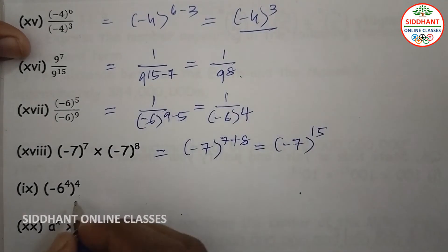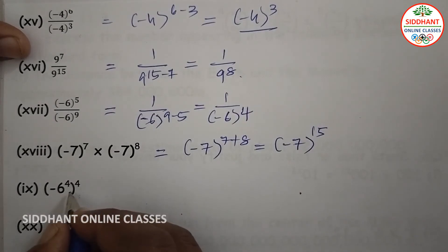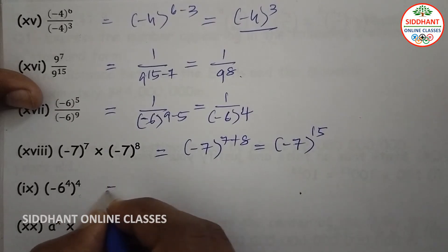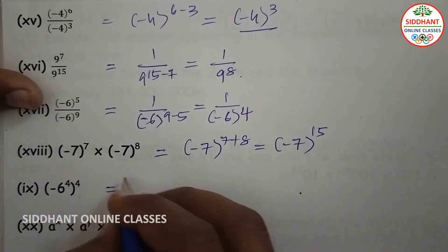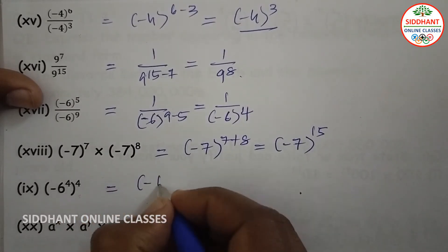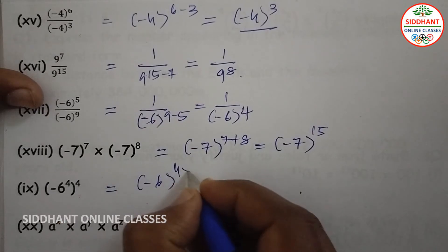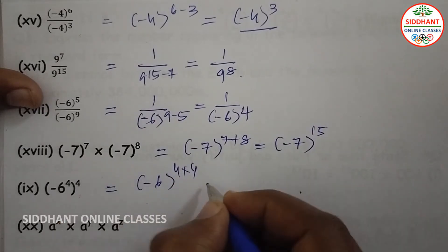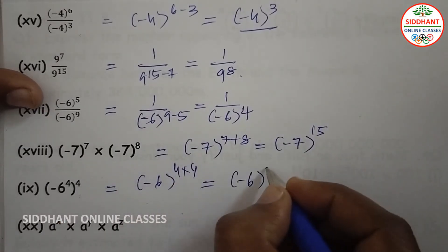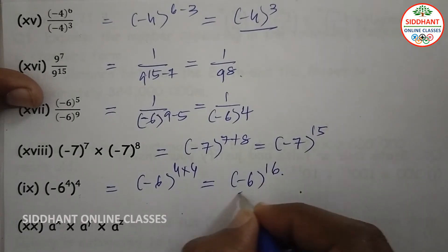Here we are going to multiply the exponents: (-6) to the power of 4, whole power 4, that means (-6) to the power of 4 into 4, which gives (-6) to the power of 16.